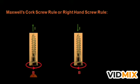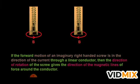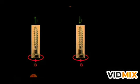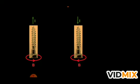Whenever there is a current in the upward direction, the magnetic field will be anticlockwise. Whenever there is a current in the downward direction, the magnetic field will be in the clockwise direction. So if the forward motion of an imaginary right-hand screw gives the direction of current through a linear conductor, then the direction of rotation of the screw gives the direction of the magnetic field around that conductor.